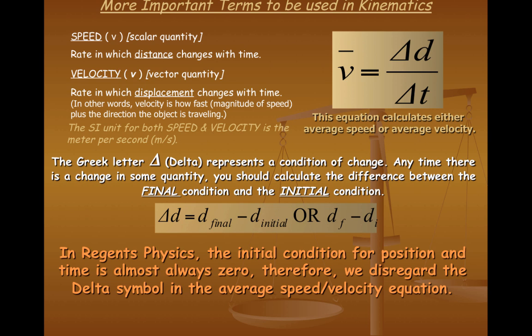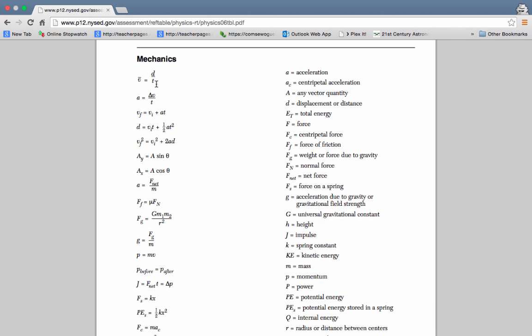Therefore, we disregard the delta symbol in the equation average speed or average velocity. The equation, the V bar is equal to D over T. Notice that there is no use of delta operations or operators simply because the distance of initial is considered to be zero and time initial is considered to be zero.